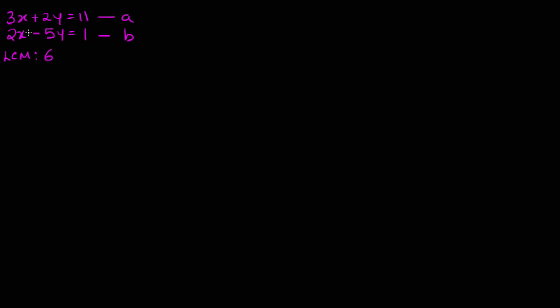So how can we then turn 3X into 6X? Times the whole equation by 2. So we're going to multiply equation A, all of equation A by 2. So we get 6X plus 4Y equals 22.